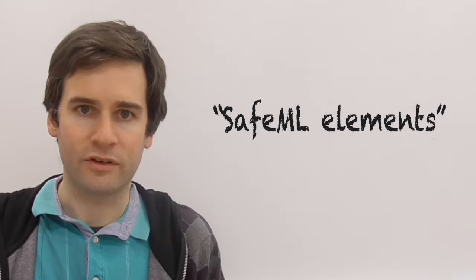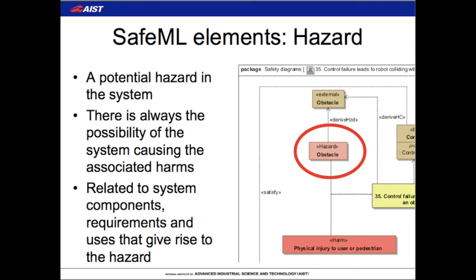SafeML includes various elements for dealing with hazards, harms, and harm contexts. The first is the hazard element — a simple element that represents a hazard in the system, which usually just carries a name. It is related to various parts of the system that give rise to the hazard. For example, it can be related to requirements that require a car to move, or to using specific components in the system — for instance, if your system uses a hazardous chemical during its procedure, that chemical will lead to a hazard in the system.